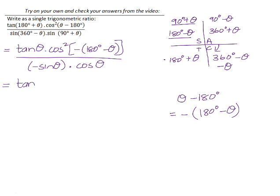Let's work a little bit more with that cos squared of negative 180 minus theta. The cos of a negative angle is positive because cos is positive in the fourth quadrant. So that will reduce to positive cos squared of 180 degrees minus theta.